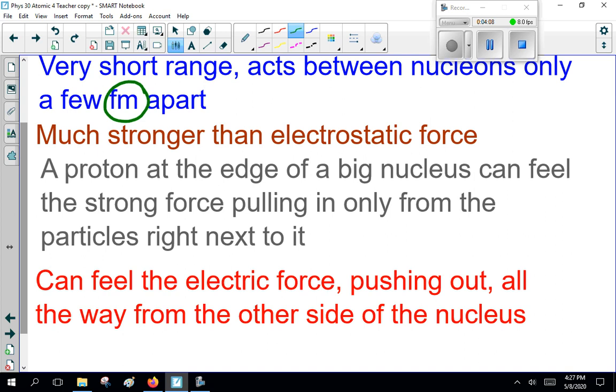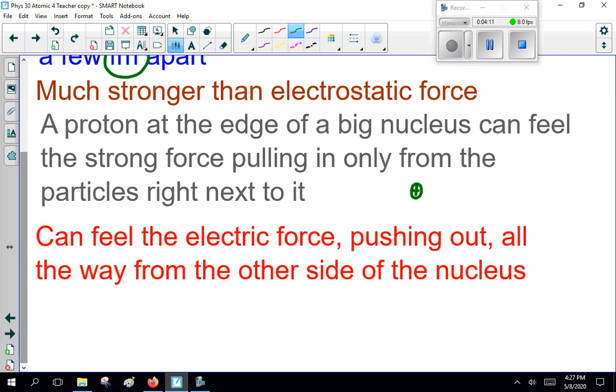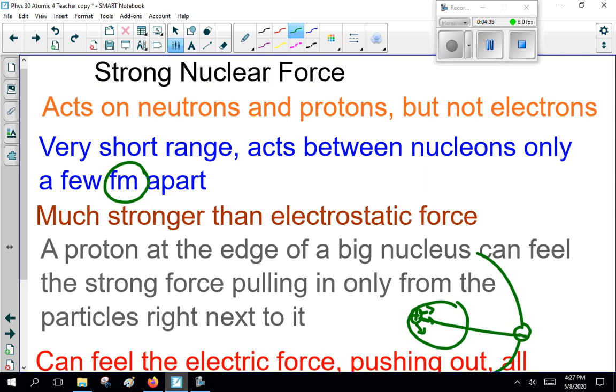Now, you can feel the electric force pushing out all the way from the other side of the nucleus. So if you have a proton here in the nucleus, it's attracted, the strong nuclear force will pull it in, attracting it to the other particles right next to it. But the electron out here in orbit will repel it because the electrostatic force acts at a much larger distance. Very short range, 10 to the minus 15 of a meter is about as far as it works, about the size of the nucleus.